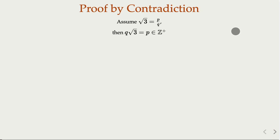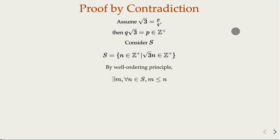We consider a subset of the positive integers S, which consists of all positive integers n such that square root of 3 times n is also a positive integer. Since we are assuming square root of 3 is rational, the set S is non-empty because q satisfies this condition. So S is a non-empty subset of the positive integers, and we can apply the well-ordering principle.